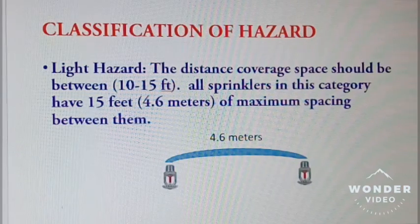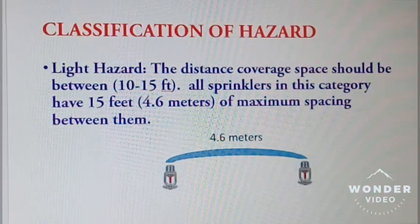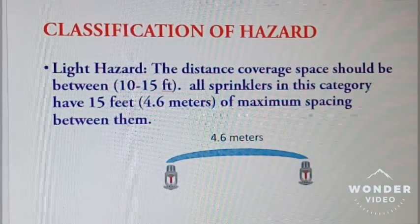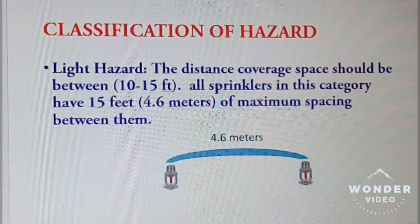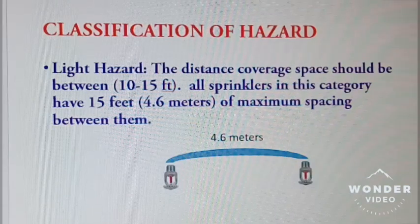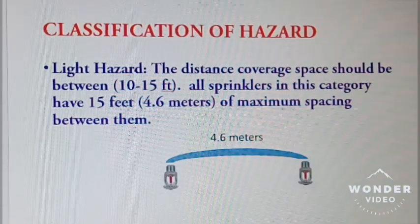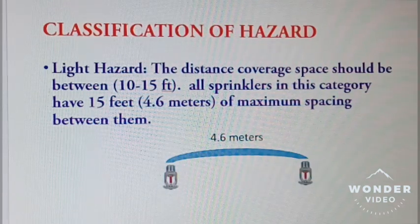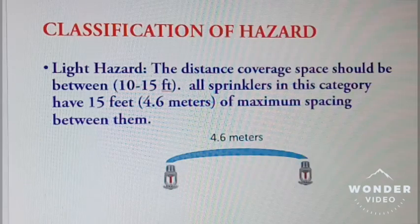Classification of hazard. Light hazard: the distance coverage space should be between 10 to 15 feet. All sprinklers in this category have a 15 feet, equivalent to 4.6 meters, of maximum spacing between them.